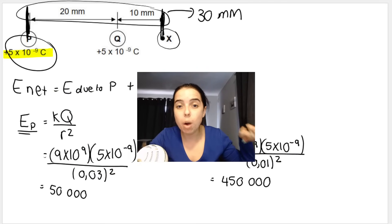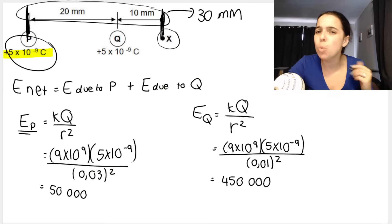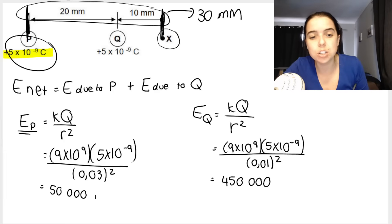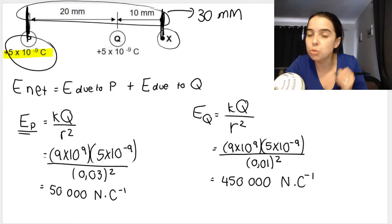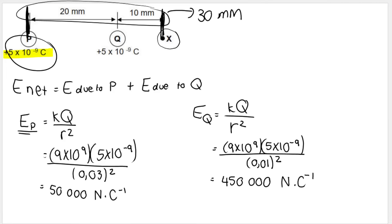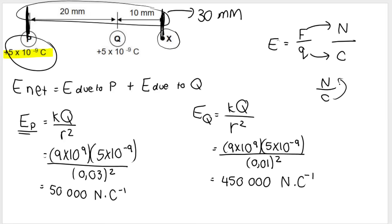I worked out the answers: I got 50,000 for the electric field due to P and 450,000 for the electric field due to Q. The unit for electric field is newton per coulomb. If you ever forget the unit, remember that electric field is also equal to force divided by charge — force is in newtons, charge is in coulombs, so the unit is N/C or equivalently N·C⁻¹.